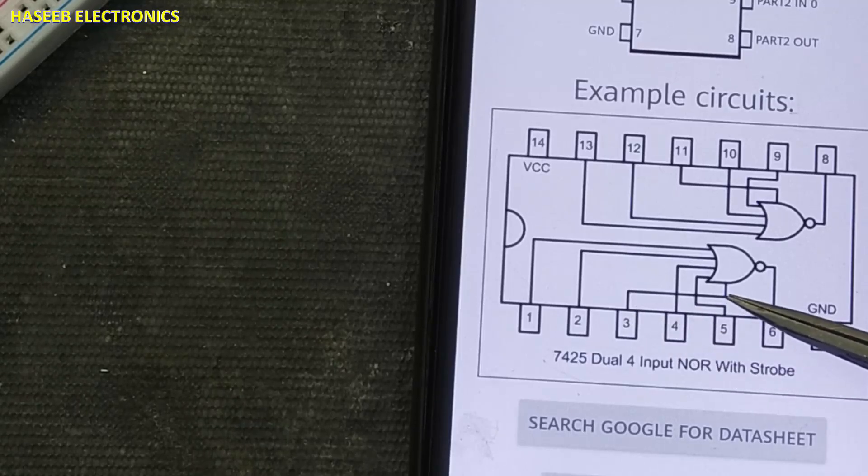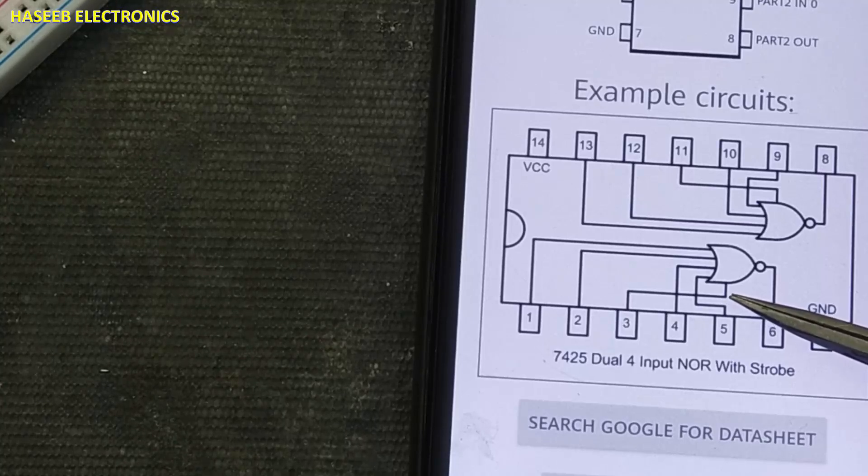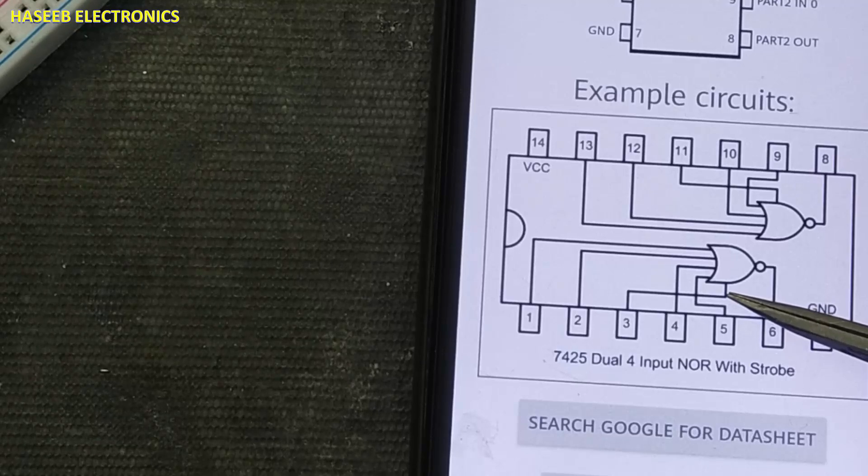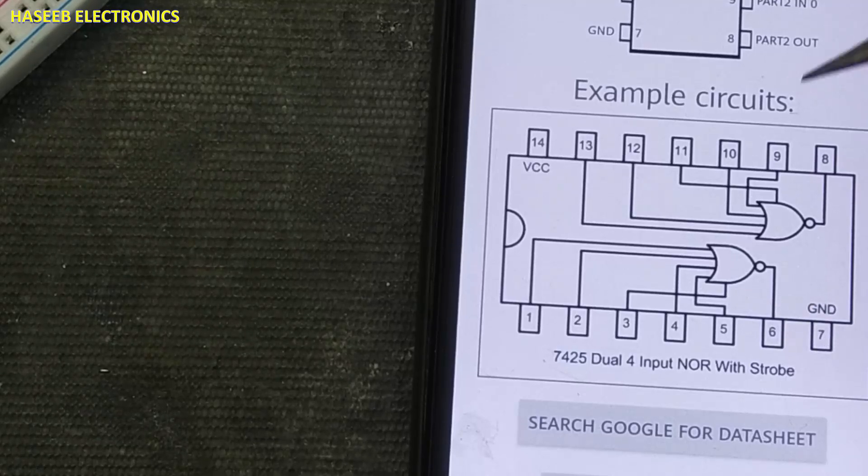Pin number 3 is entering from the side. That is strobe pin. These are 4 input pins and this one strobe pin or enable pin. Same here.